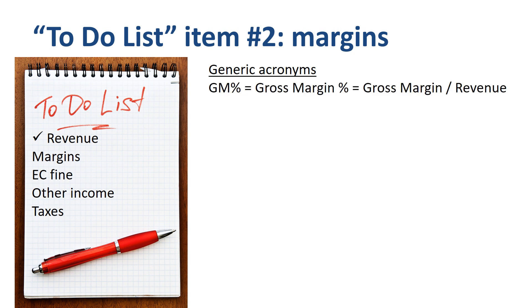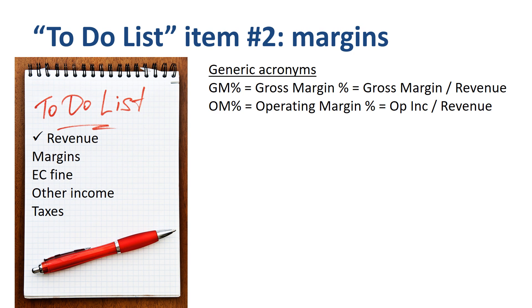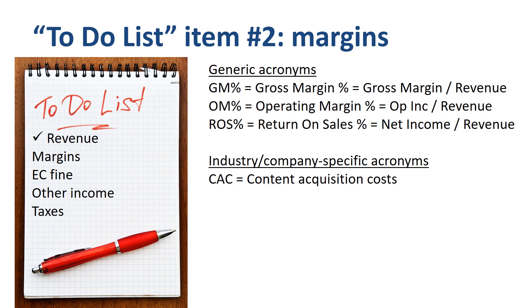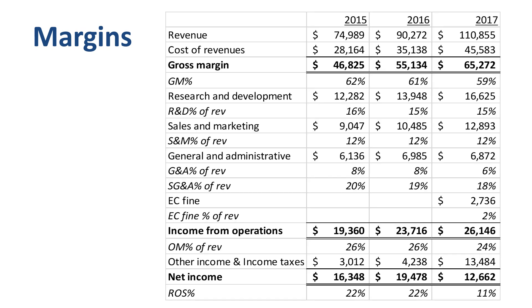GM% is Gross Margin percentage, calculated by taking Gross Margin and dividing it by revenue. OM% is Operating Margin percentage, calculated by taking Operating Income and dividing it by revenue. ROS% is Return on Sales percentage, calculated by taking Net Income and dividing it by revenue. Industry or company-specific acronyms include CAC and TAC. To review margins over three years, I'll use Excel for the calculations — here's that overview on the screen.